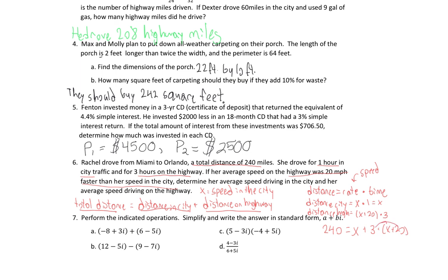Subtracting 60 from both sides: 180 equals 4X. Dividing by 4: X equals 45 miles per hour, which is the speed in the city. Since the highway was 20 miles per hour faster, the highway speed is 65 miles per hour.